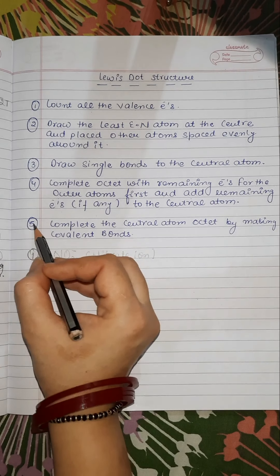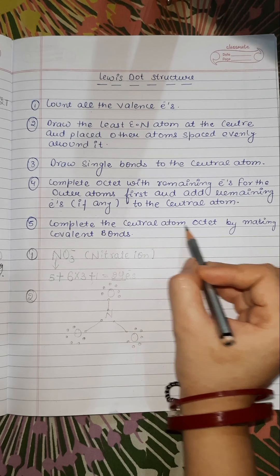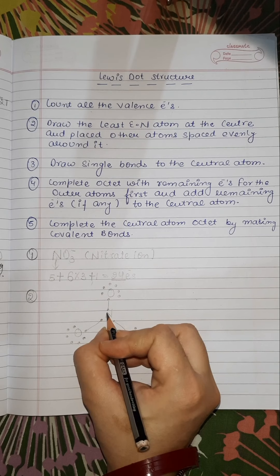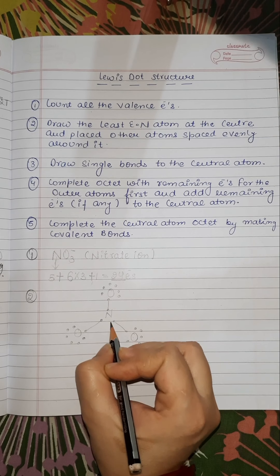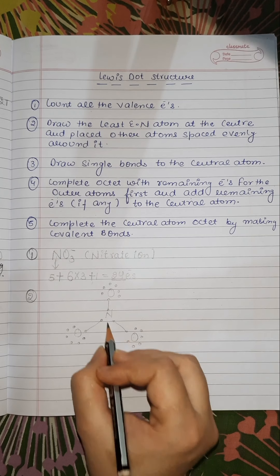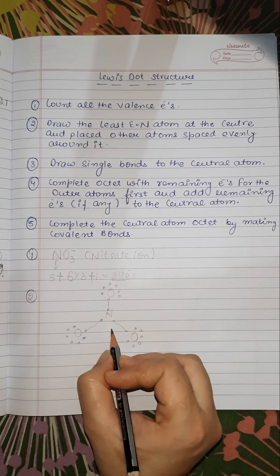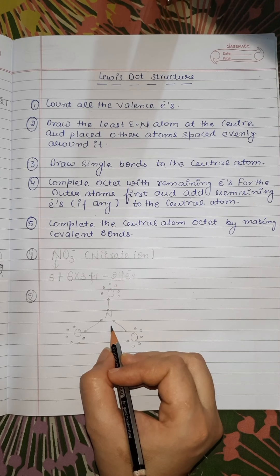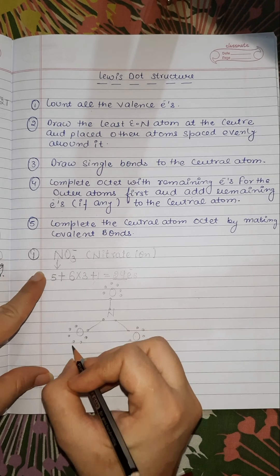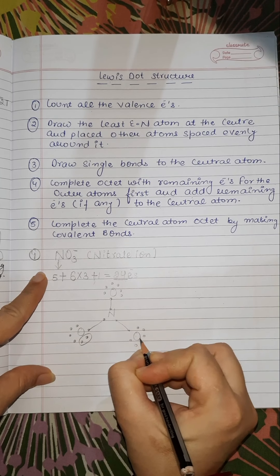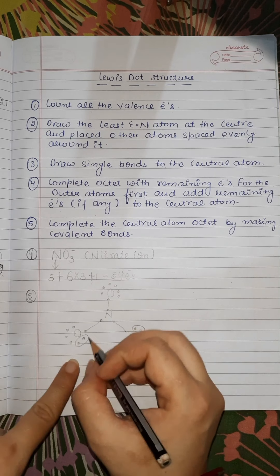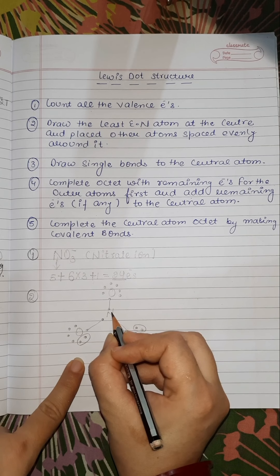Step 5: Complete the central atom octet by making covalent bonds. We now check the octet of the central nitrogen atom. Counting its electrons, nitrogen only has 6 electrons — it needs 2 more to complete its octet. So it will take 2 electrons from one of the oxygen atoms to form a double bond.